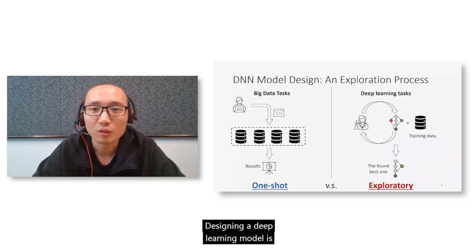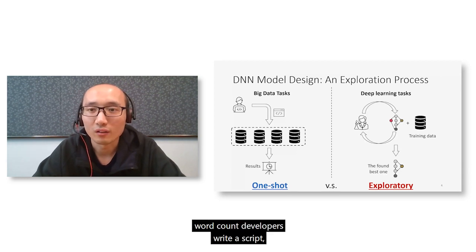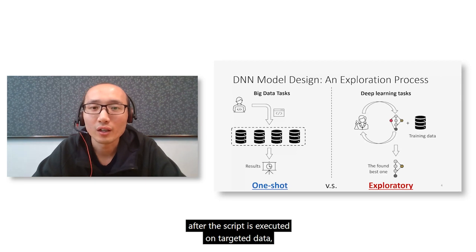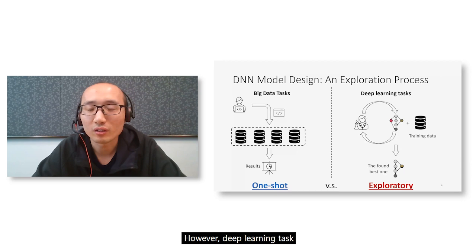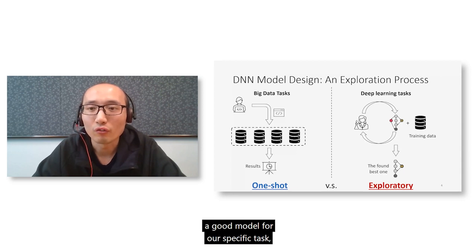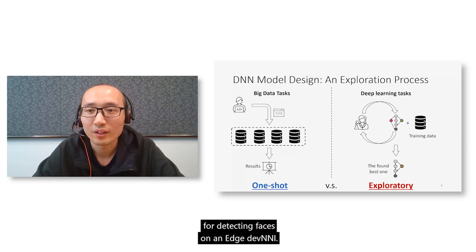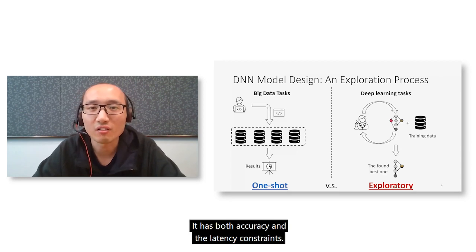Designing a deep learning model is very different from traditional big data tasks. For a big data task, for example word count, developers write a script. After the script is executed on targeted data, we get the result and the task is done. However, a deep learning task is not about training a given model. Instead, its goal is to find a good model for a specific task, for example designing a DNN model for detecting faces on an edge device with both accuracy and latency constraints.